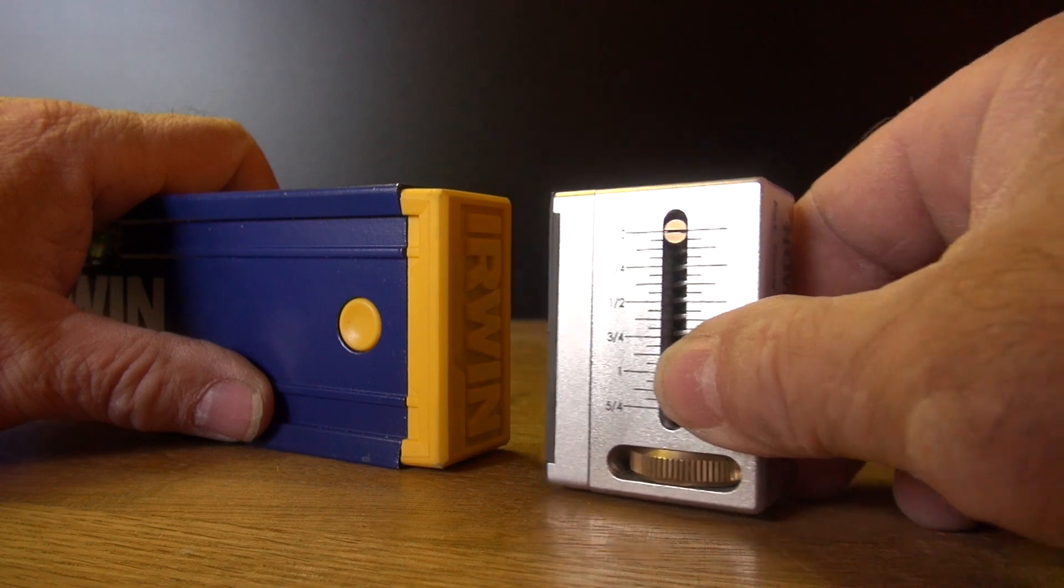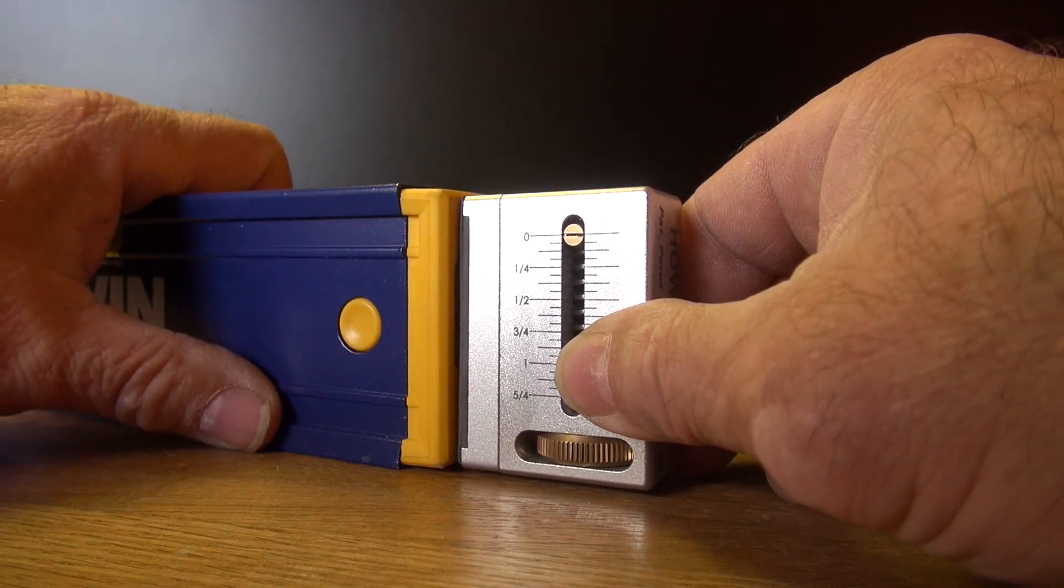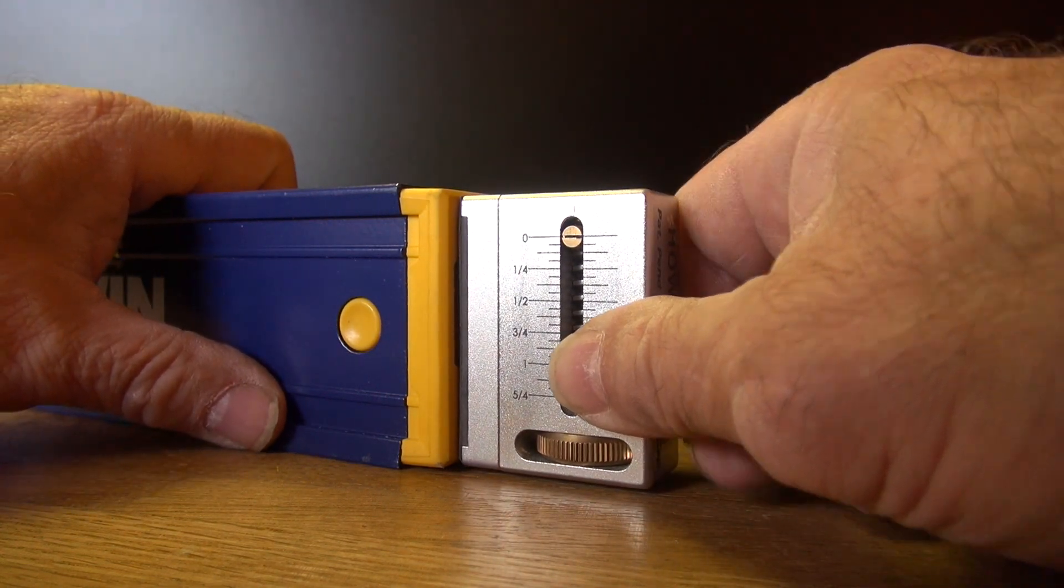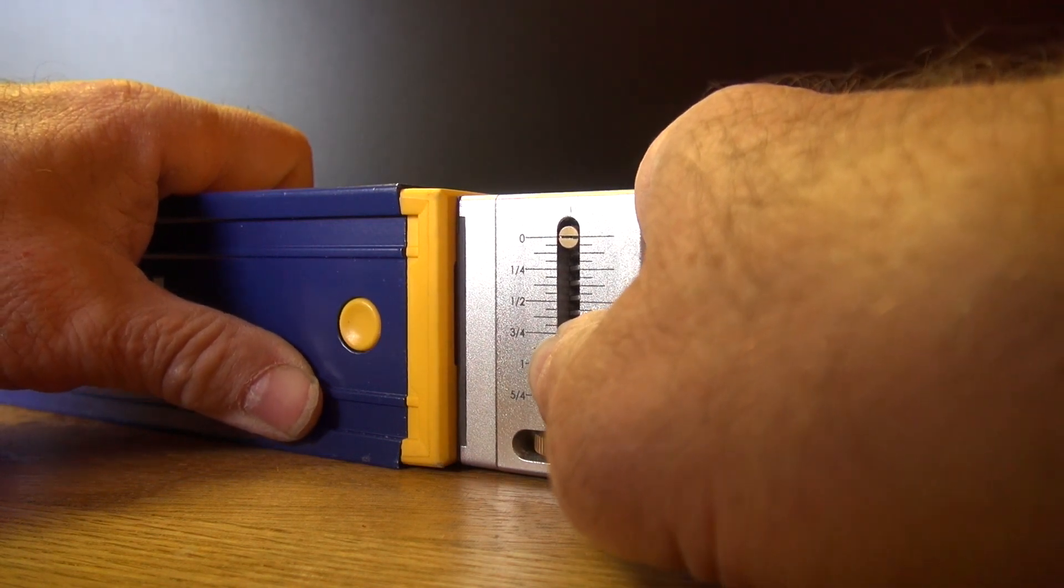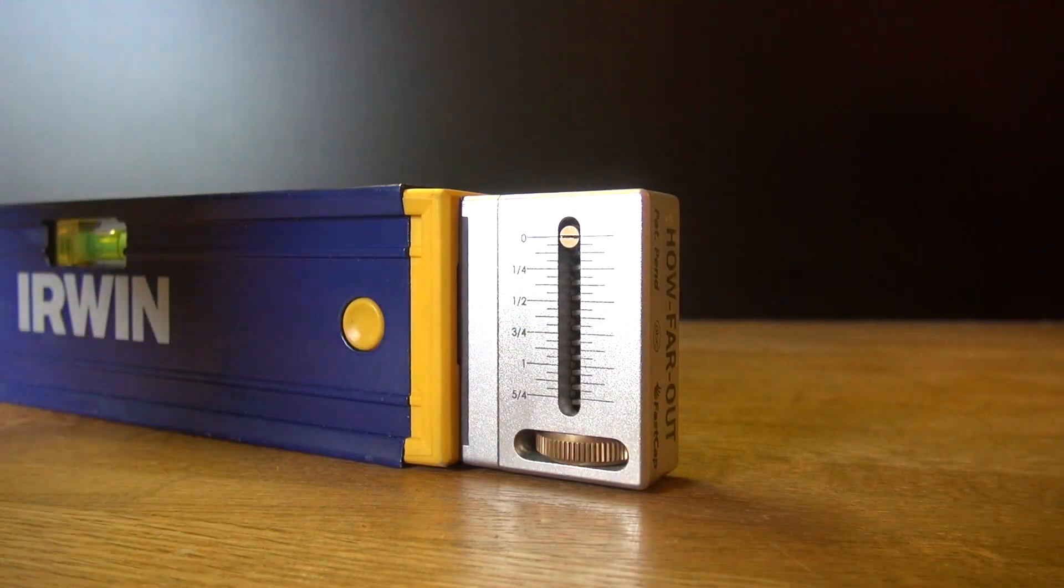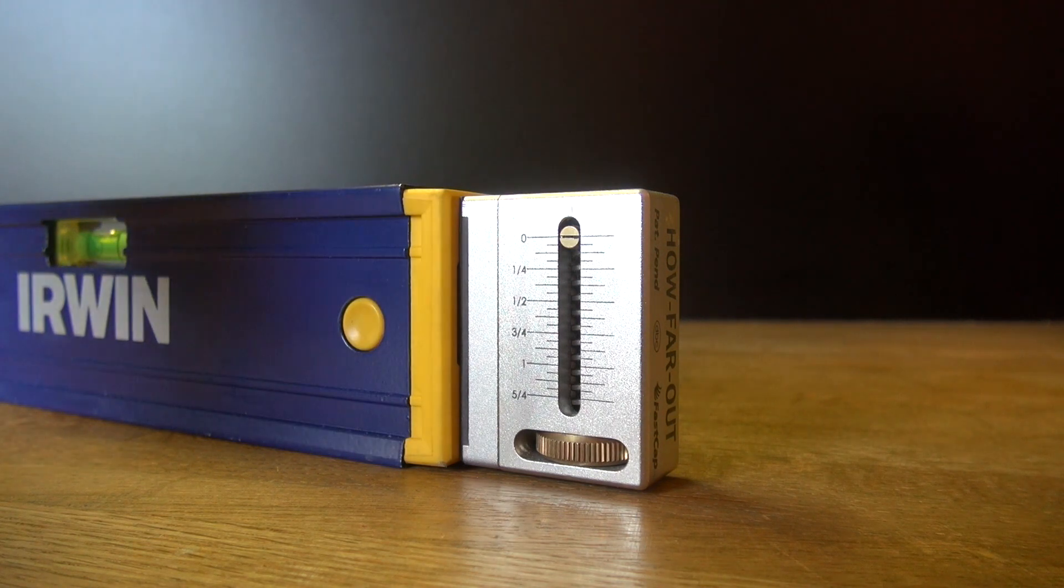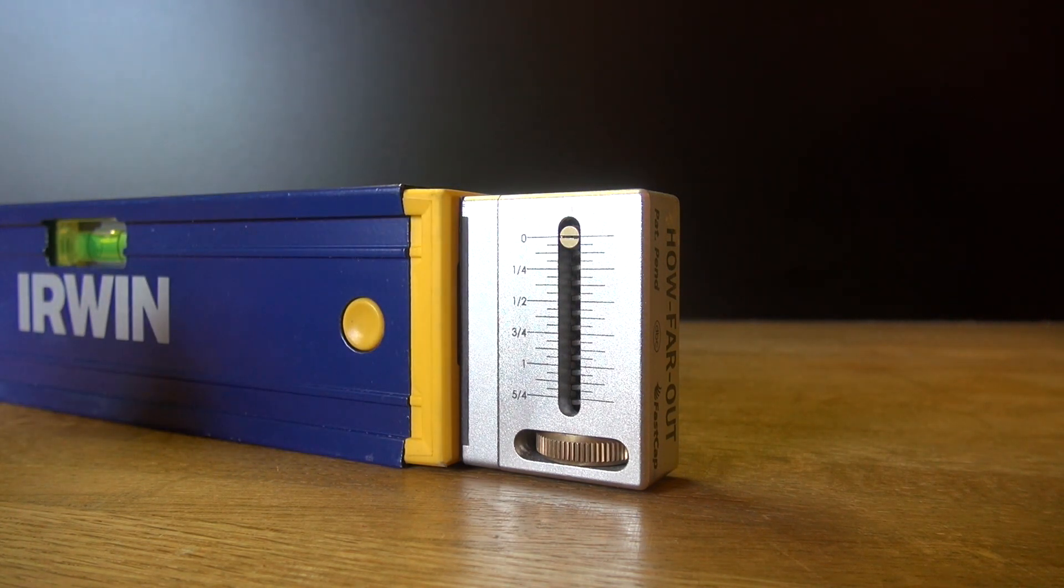Apply some good pressure and the installation is done. Wait 24 hours and that VHB tape will be like it's welded on.